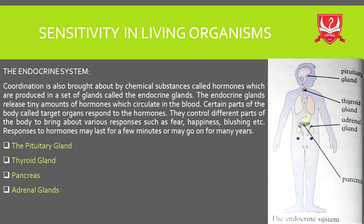The new thing for you is the target organ. I will discuss this. In the diagram there are four endocrine glands. The first one is the pituitary gland, also known as the master gland. It is called a master gland because it is involved in coordination.